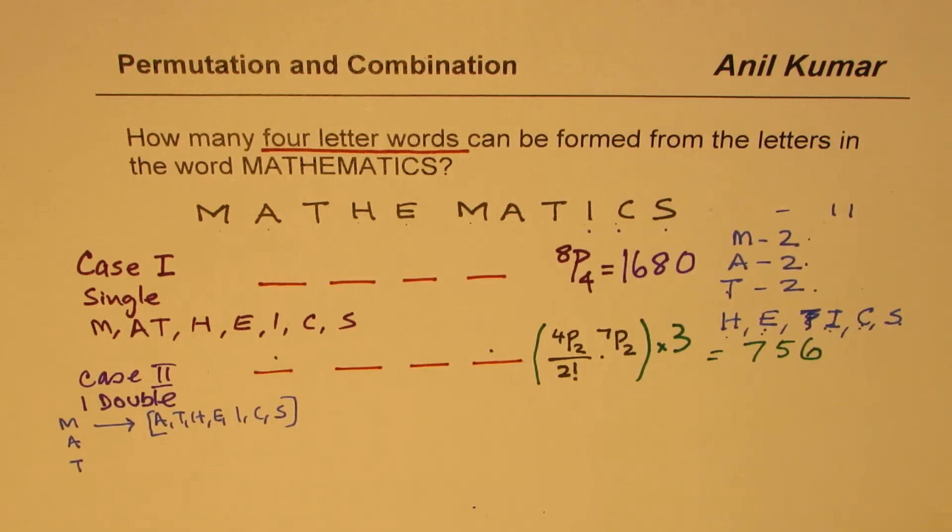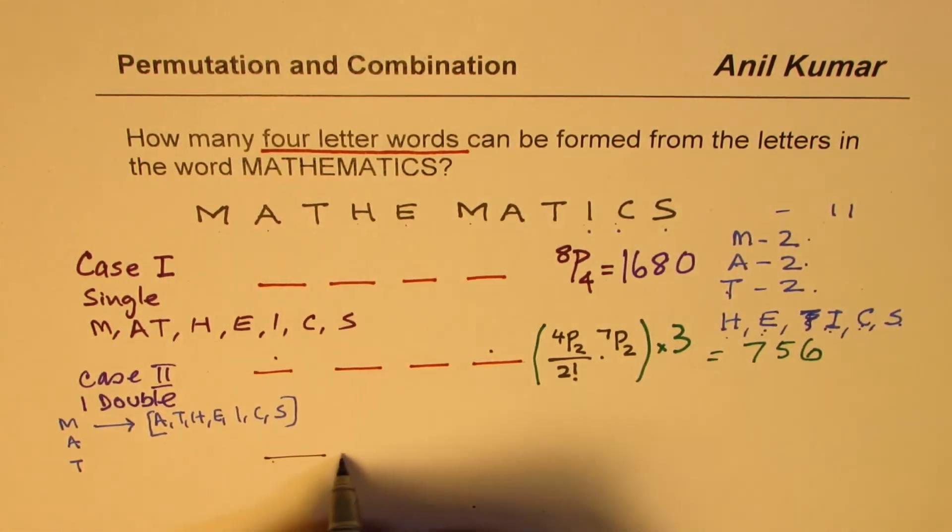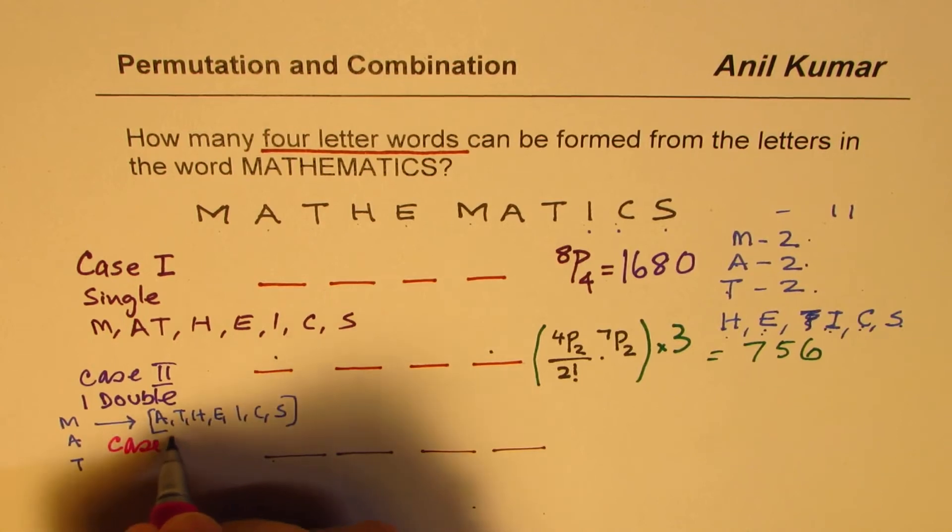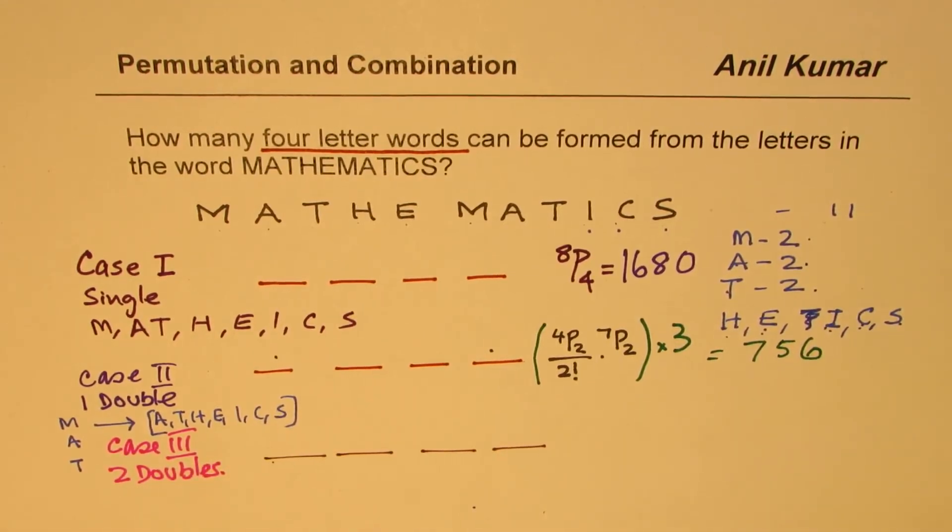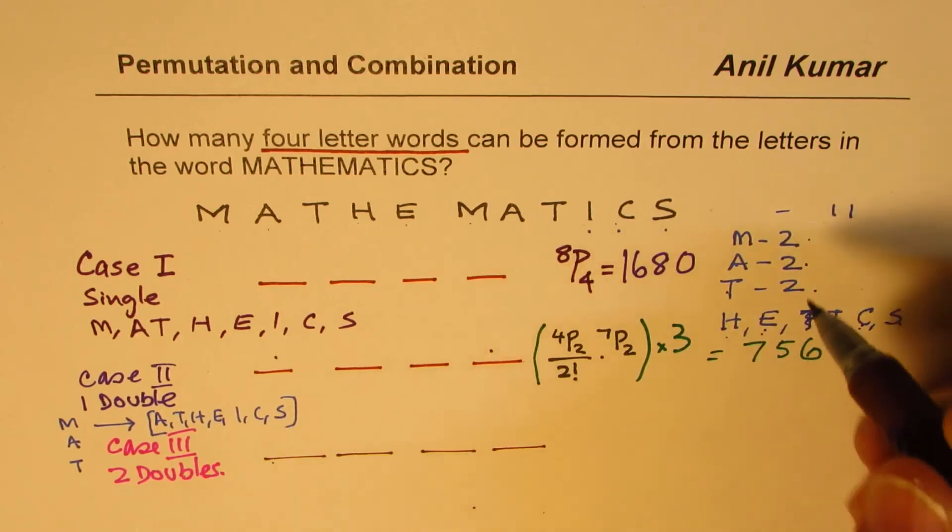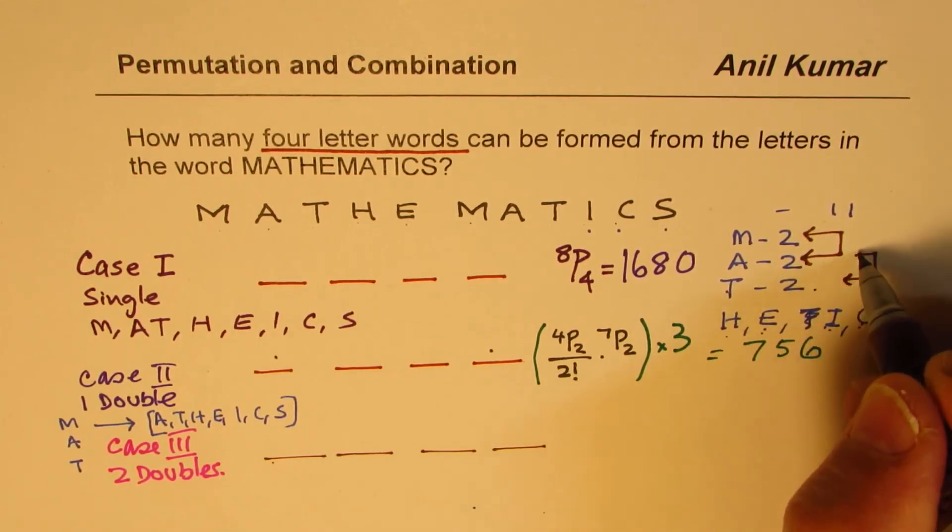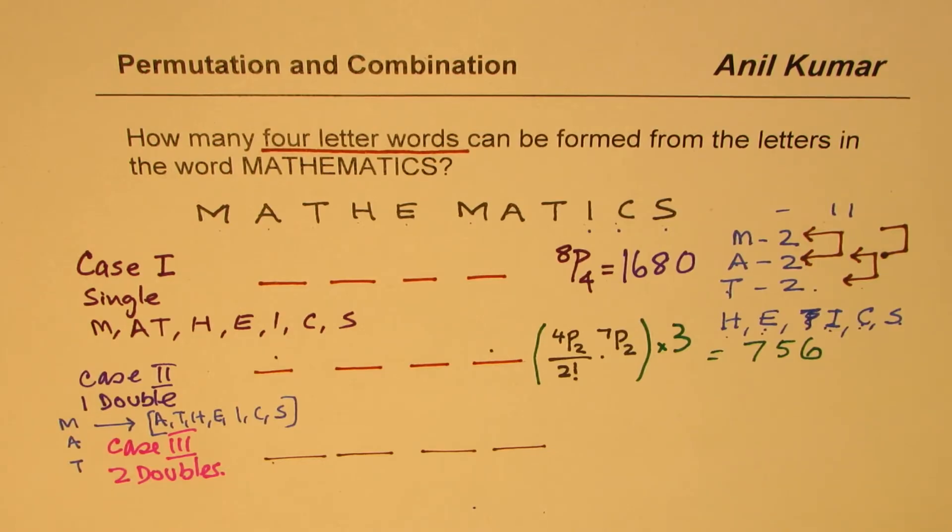Now, what else can we do? Well, we have four letters. So we could also go for two doubles. So if I'm going for two doubles, we will call this as case three. So we get two doubles. So for two doubles, we could have combination of either we could have these two, or we could have these two, or we could have these two. So there are six combinations we could have two doubles.